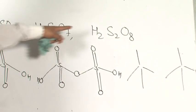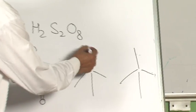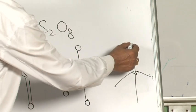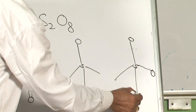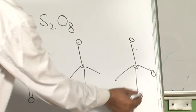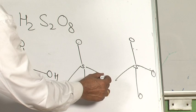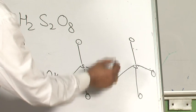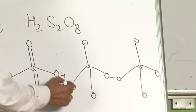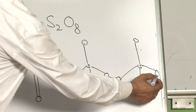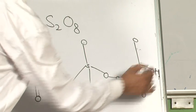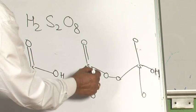In H2S2O8: 1 oxygen, sulfur, sulfur, then 3 more oxygen on each side: 1, 2, 3 on this sulfur and 1, 2, 3 on that sulfur, then 2 more making 7 and 8 — this is a peroxide form. Only 2 hydrogen: one with this sulfur and one with this sulfur, and all the remaining bonds will be double bonded.